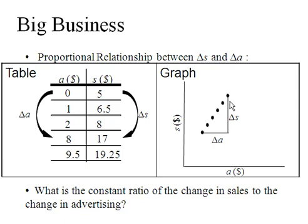That's what gives us this linear graph. No matter what advertising price we pick and what sales price we pick, if we look at the ratio of the change in advertising and the change in sales, we are going to get 3 halves.